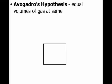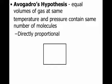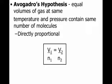The third relationship we're going to look at is called Avogadro's hypothesis — this is not quite a law. Avogadro's hypothesis looks at volumes and moles. It says equal volumes of gas at the same temperature and pressure contain the same number of molecules. The volume and the moles are directly proportional: if you increase the number of moles, you increase the volume; if you decrease the number of moles, you decrease the volume.